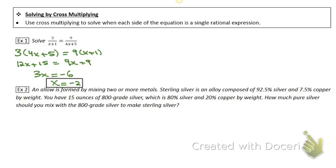You want to make sure that the solution does not make the denominator equal to zero, and it doesn't, so it is a solution. The next problem is a mixture problem — an alloy is formed by mixing two or more metals.